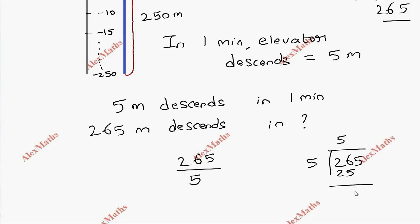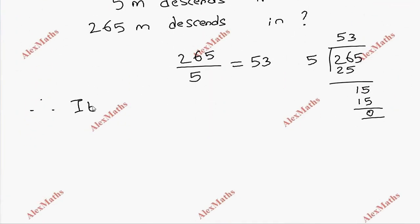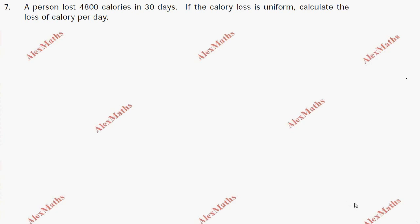Continuing the division: 6 minus 5 is 1, bring down 5, giving 15. 3 times 5 is 15, remainder 0. After division, the answer is 53. Therefore it takes 53 minutes to reach the level of minus 250 meters.